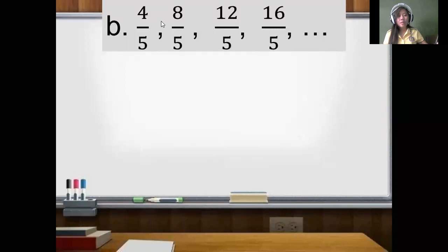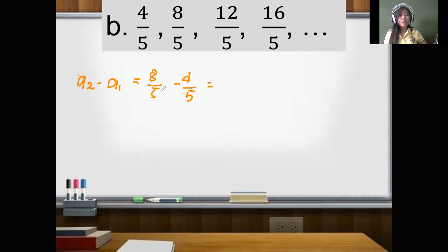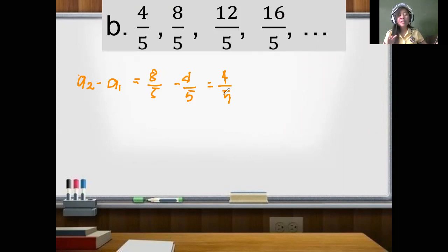Finding the common difference: A sub 2 minus A sub 1 equals 8 over 5 minus 4 over 5. Since they have a common denominator, just subtract the numerators and copy the denominator. So 8 minus 4 is 4 over 5. Now let's find A sub 3 minus A sub 2: 12 over 5 minus 8 over 5. Again, 12 minus 8 is 4, so the result is 4 over 5. From A sub 1 up to A sub 3, they have the same common difference.